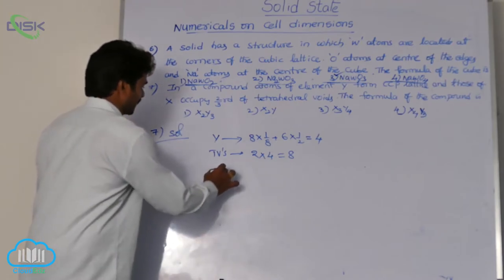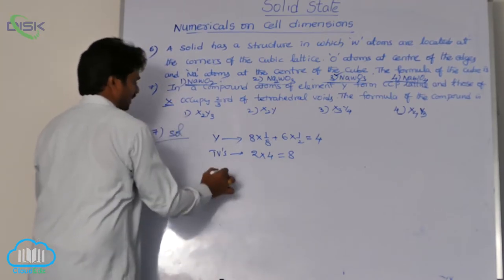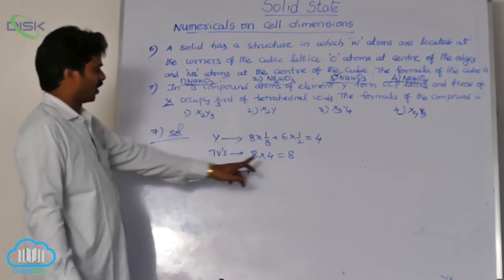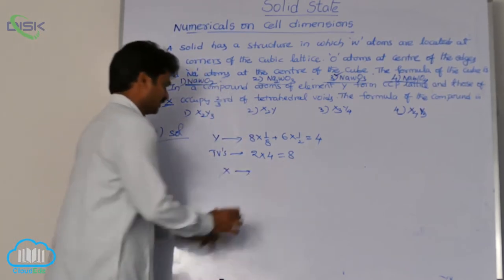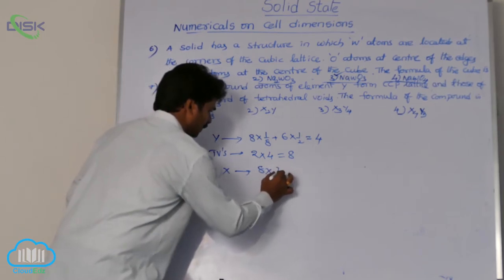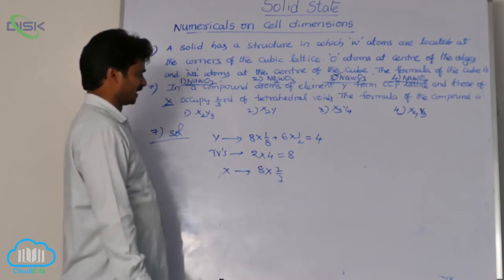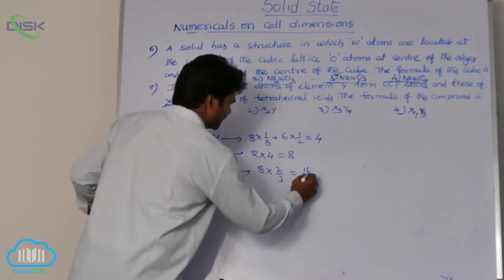X occupies only two-thirds of tetrahedral voids. How many tetrahedral voids are possible? 8. So 8×2/3, the number of atoms of X is 8×2/3, that means 16/3.